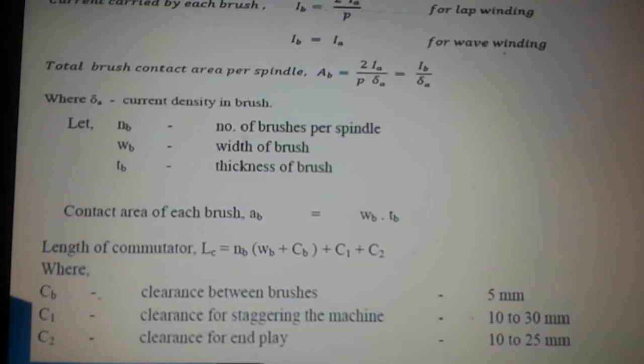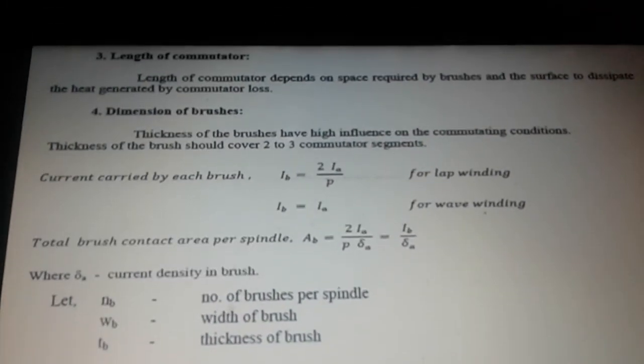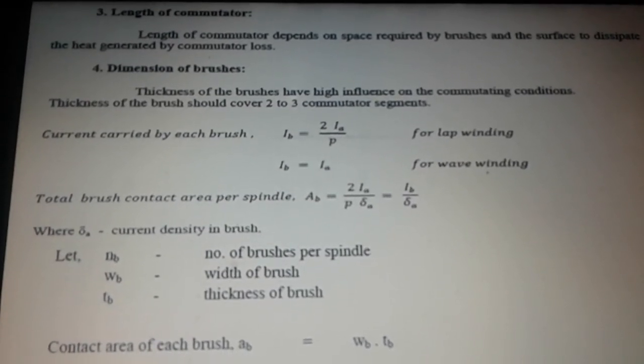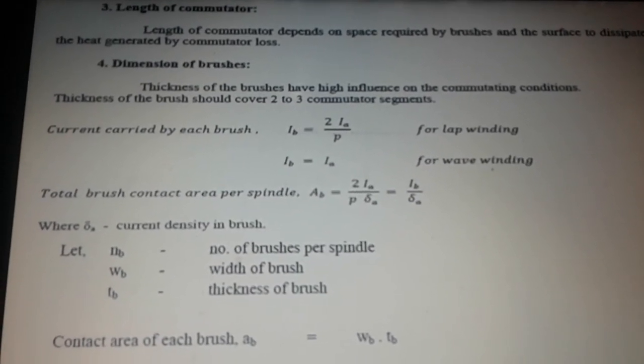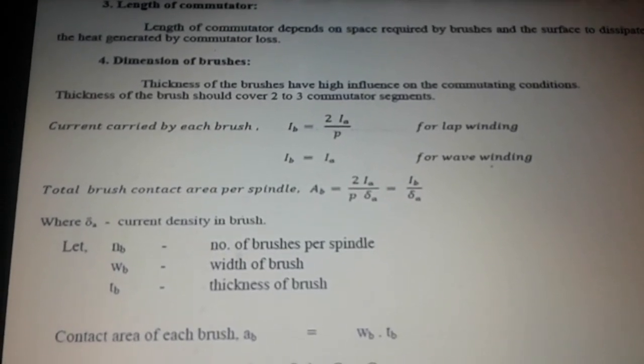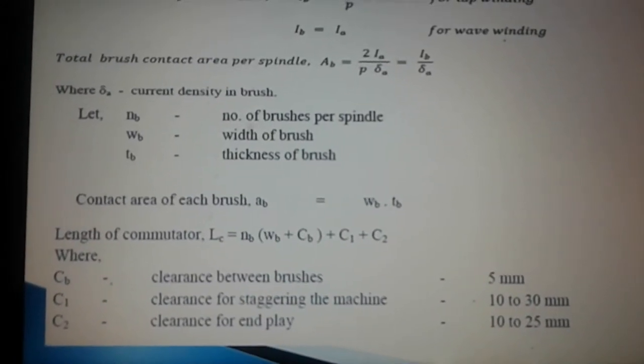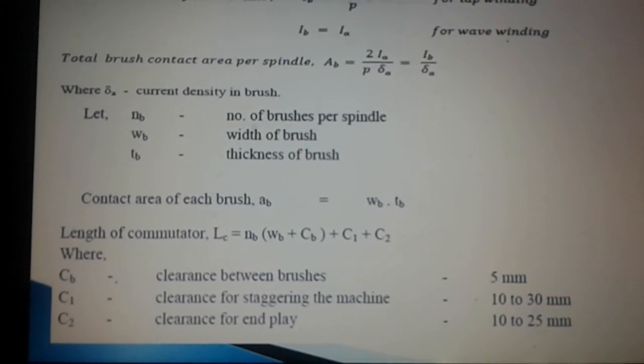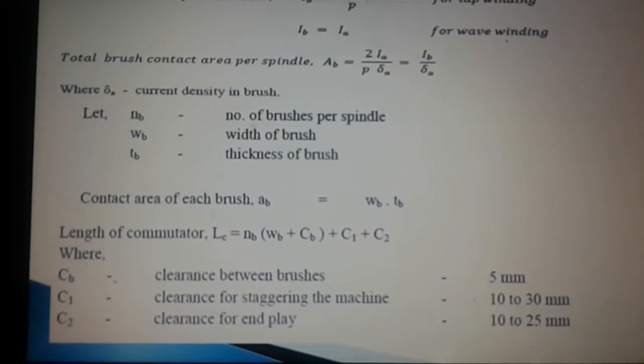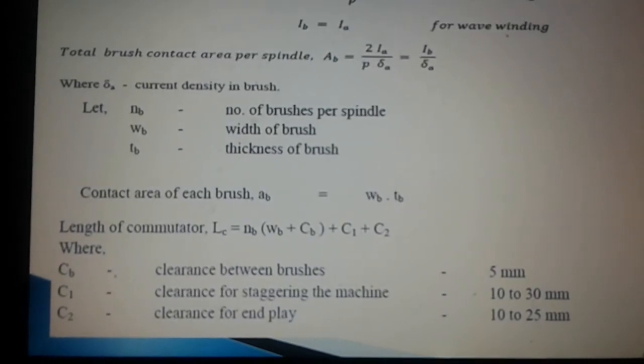Length of commutator formula: Since the length of commutator depends on space required for brushes and heat dissipation during commutator loss, the length of commutator LC equals NB times WB plus CB, where CB is the clearance between the brushes, plus C1 and C2.